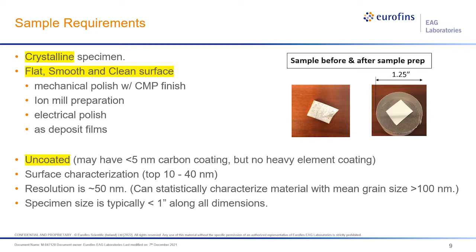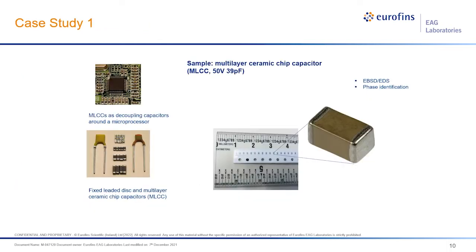The sample must be uncoated — we prefer samples with no heavy-element coating, because this technique is very surface-sensitive, collecting information only from the top 10 to 40 nanometers of the surface. Resolution can vary depending on material system and deformation level, but the best we can achieve is about 40–50 nanometers for grain size in standard mode, and down to 20 nanometers in transmission mode. We accept sample sizes typically smaller than one inch, preferably smaller than one centimeter on all dimensions.